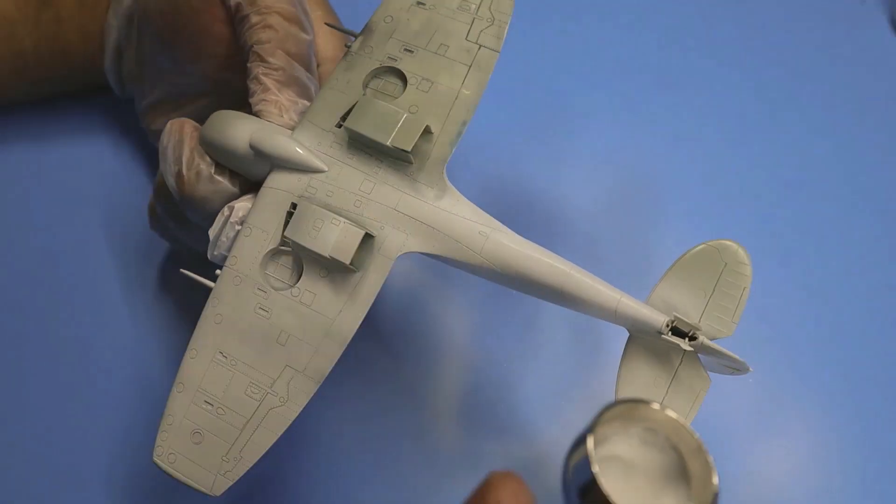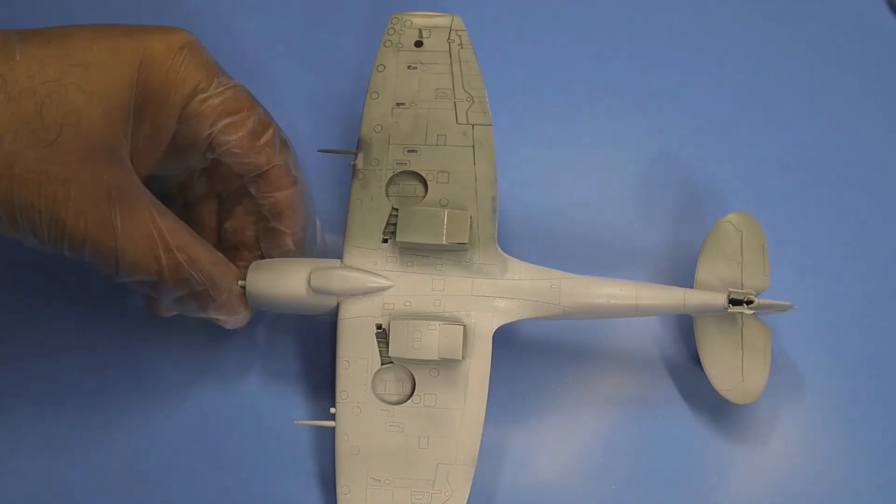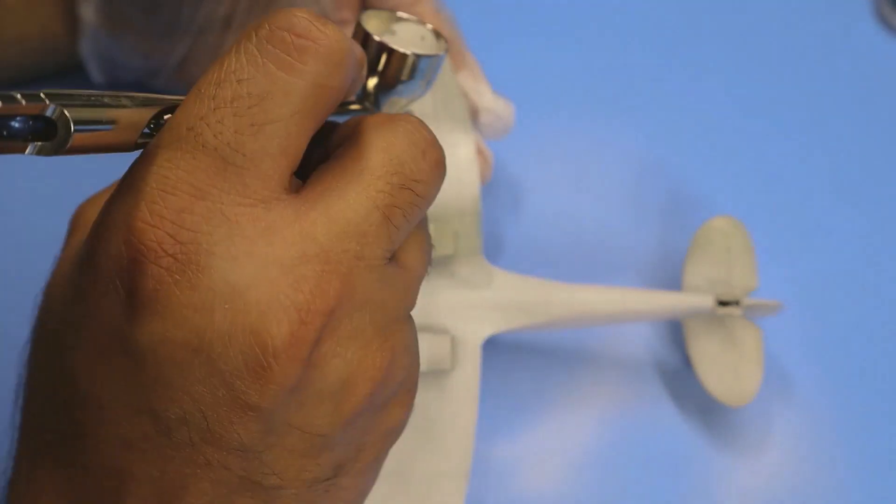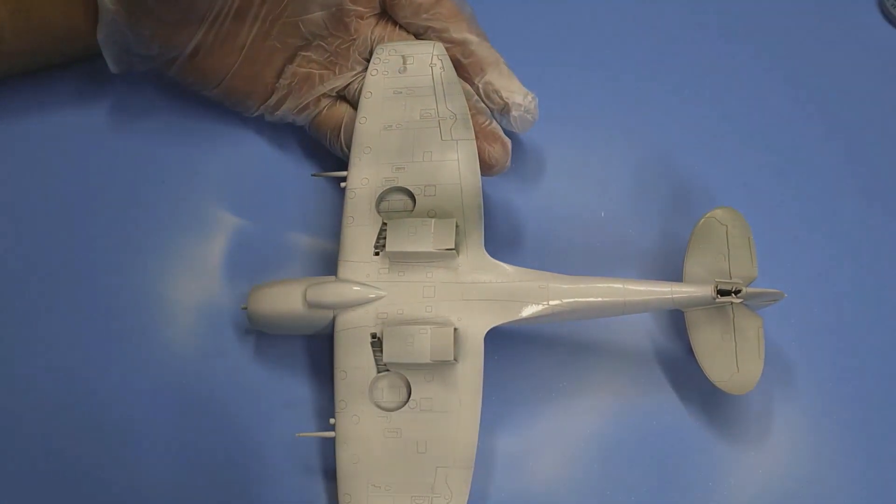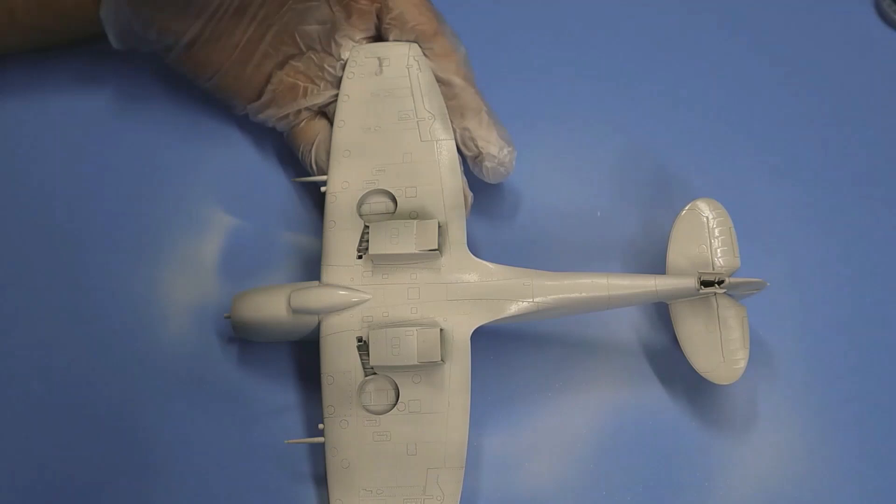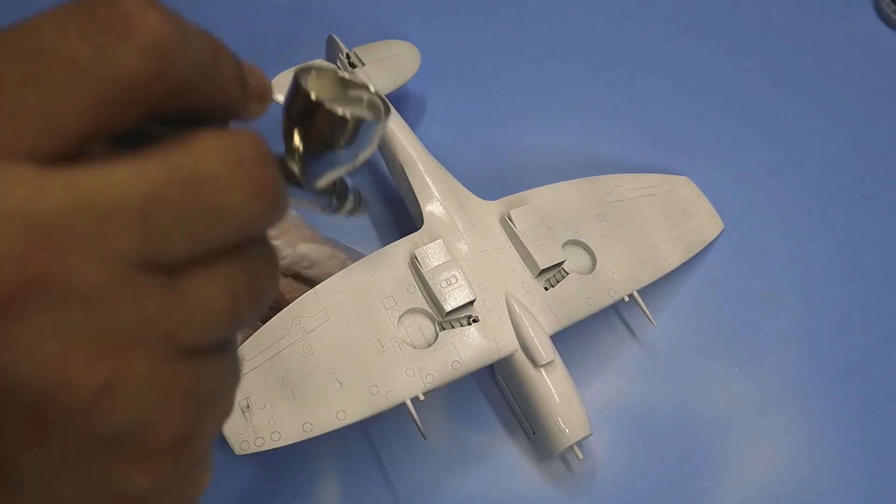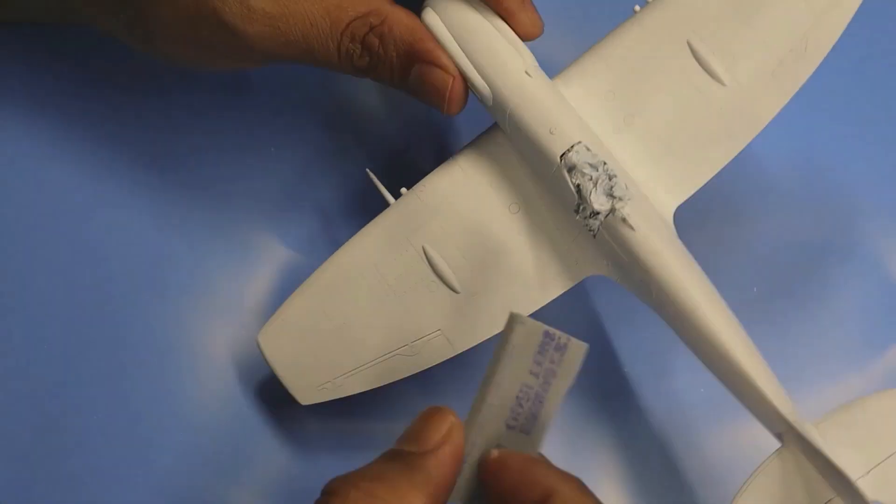Make sure when you're airbrushing to get every nook and cranny of your model. That is very important. If you miss something, it will reflect when you put on the natural metal finish. So the intakes there and the bottom, the wheel wells—shoot them at different angles so you cover everything. You can use a hairdryer to speed up the drying process with the primer. It also makes it more resilient as well.